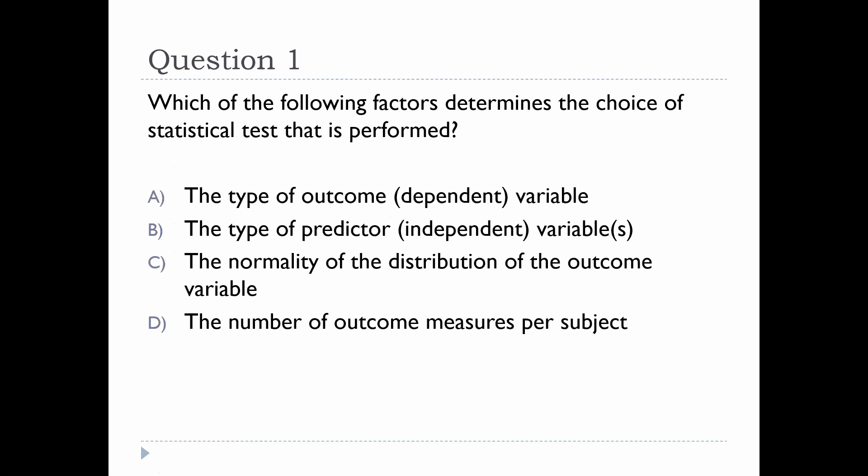If everyone can unmute their mics, I want everyone to participate. Which of the following factors most determines the choice of statistical test performed? Is it A) the type of outcome variable, B) the type of predictor variable, C) the normality of the distribution of the outcome variable, or D) the number of outcomes per measure?